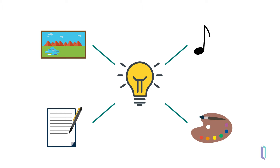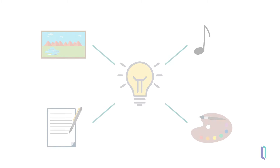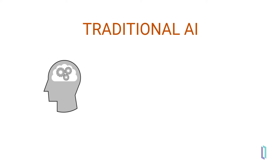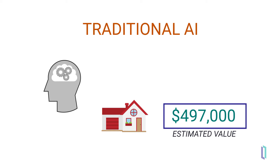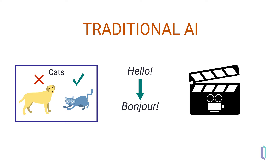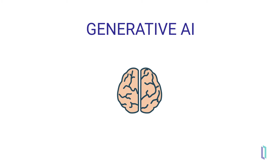Let's dive a bit deeper into what sets generative AI apart. Traditional AI applications, including most forms of machine learning, are designed to make predictions or decisions based on input data — for example, estimating the value of a house based on its location and size. They might recognize objects in an image, translate languages, or recommend which movie to watch next. Generative AI, however, is not just reactive — it's creative.